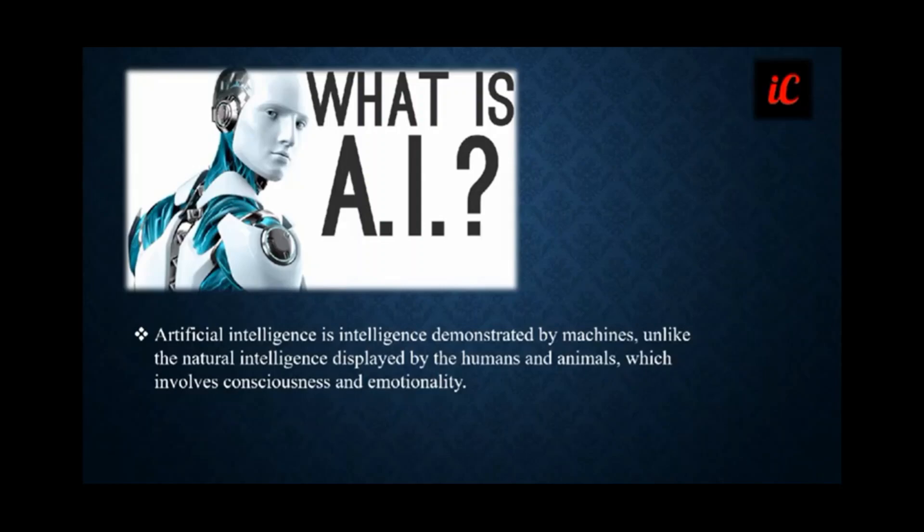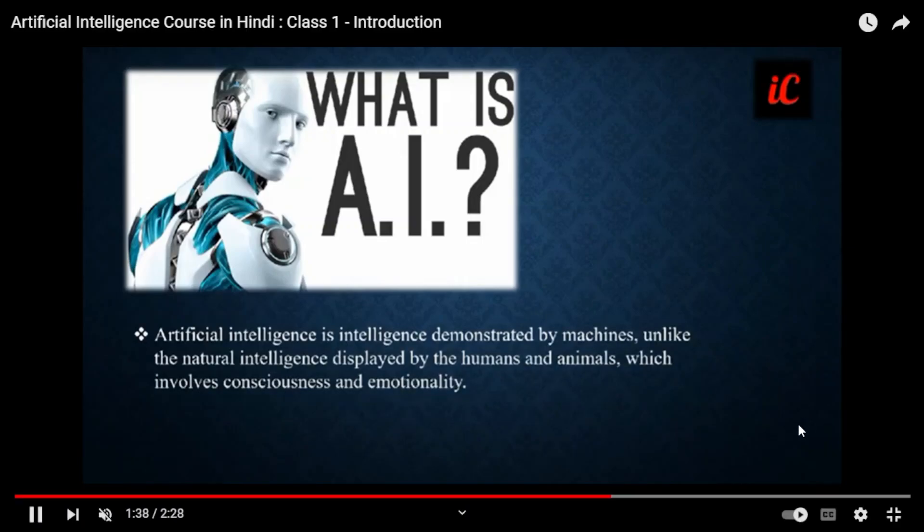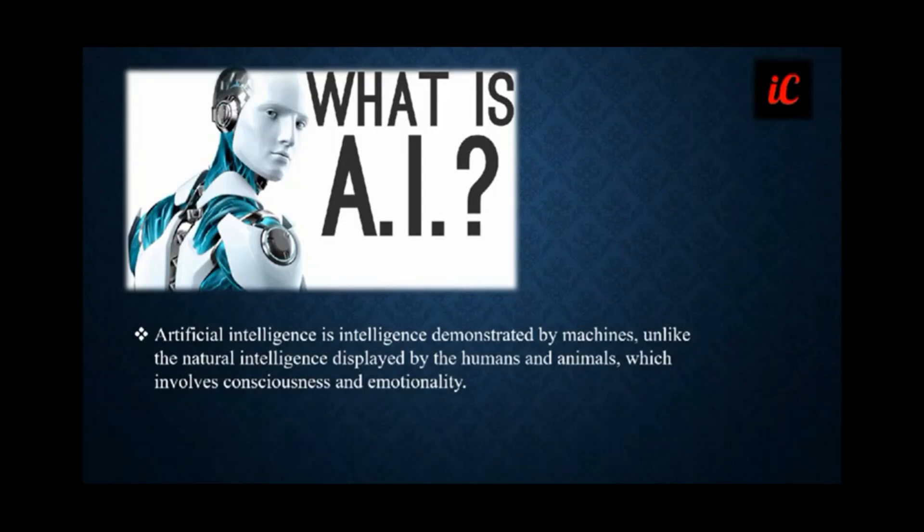So here I hope you understood what is the particular meaning of the artificial intelligence. We will study about the robotic things that is available in this case. So these are the basic functions that is available in case of the artificial intelligence. So that's all for today's class. Tomorrow we will study about more features related to AI. Thank you so much.